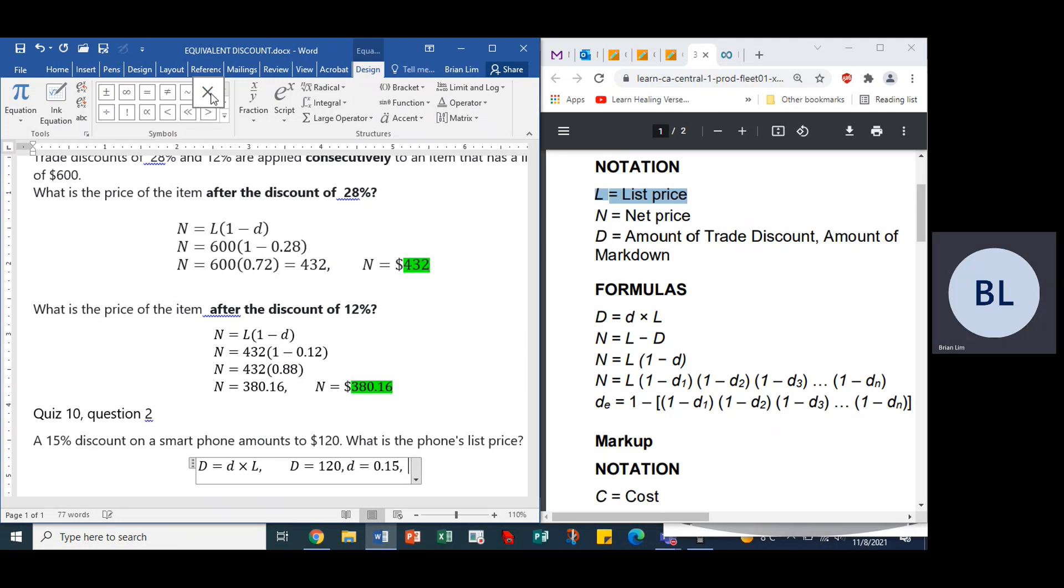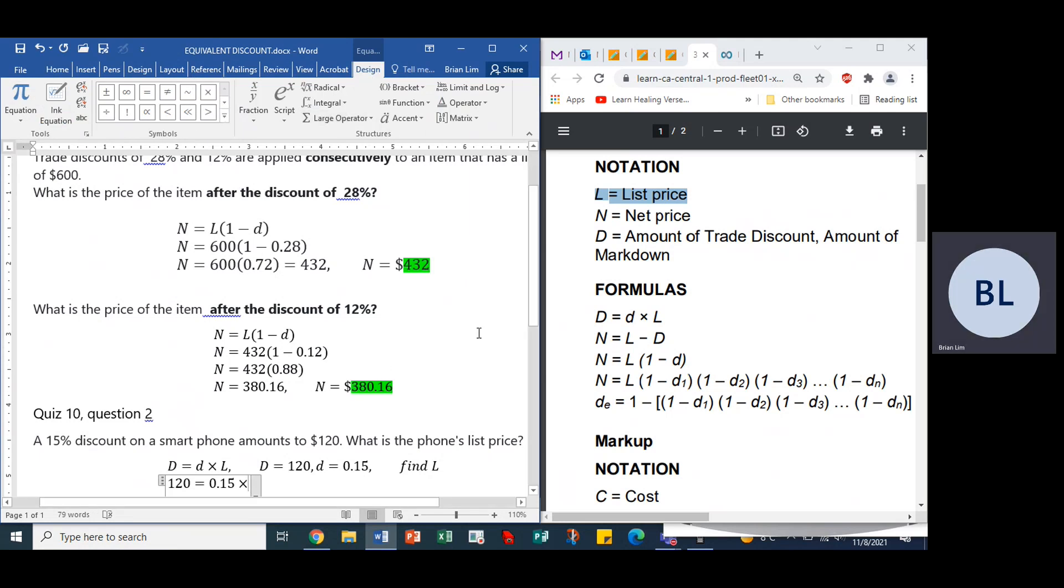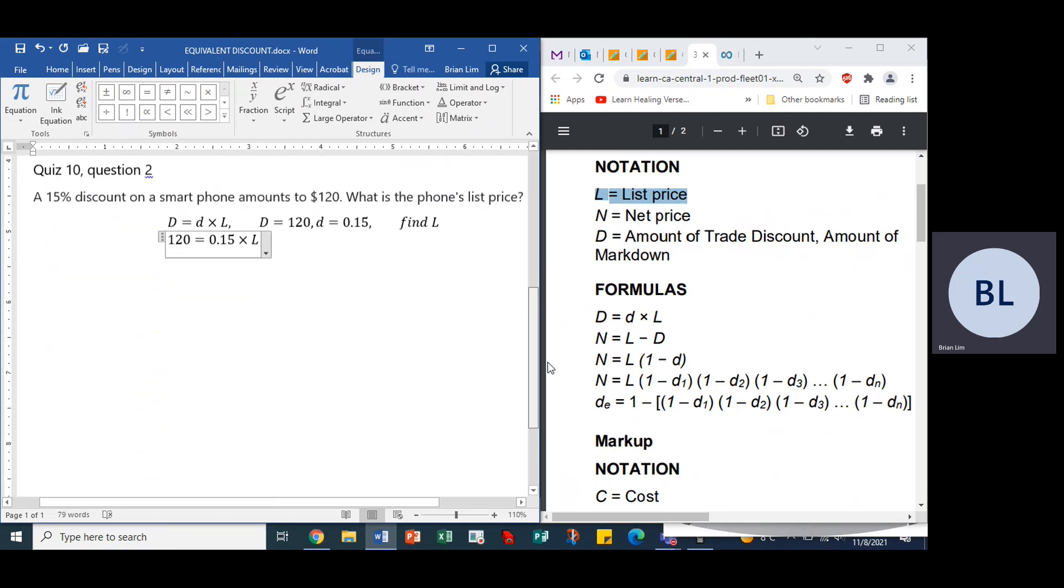So we have to find L, the other part is to find L. OK, the list price, which is right here, the phone's list price. OK, so that is L. Alright, so let's continue. Now we can put the numbers in: 120 is equal to 0.15 times L. Let's move it up so you can see it clearer, a lot clearer now.